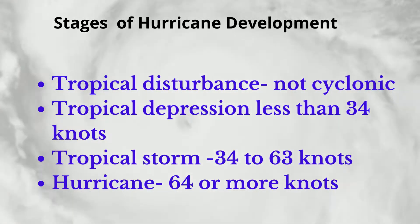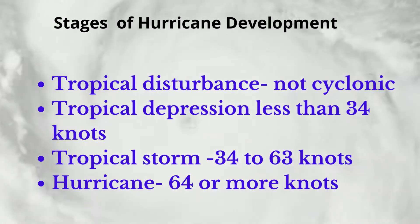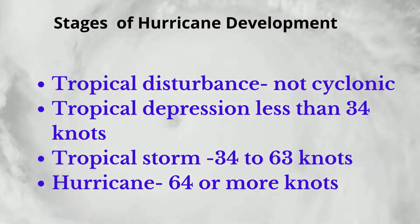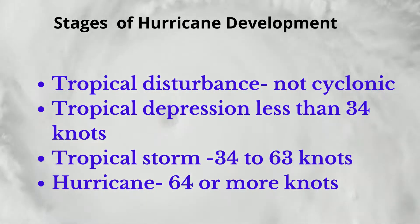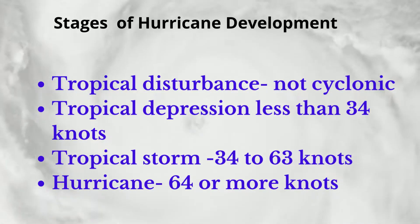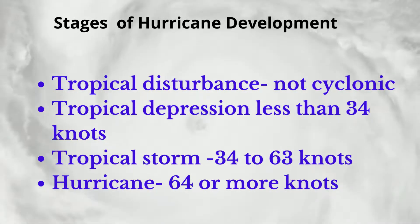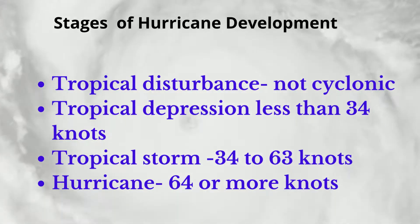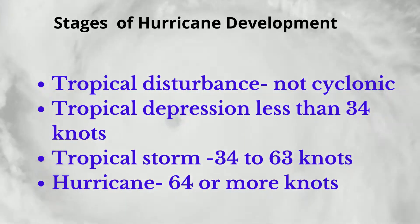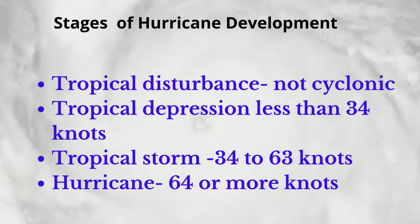A hurricane is a well-organized system of clouds with heavy rain rotating around an area of low pressure, with maximum sustained surface winds of 64 or more knots or 74 or more miles per hour.